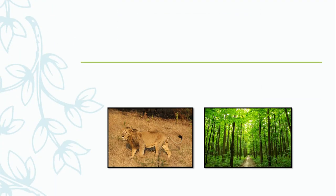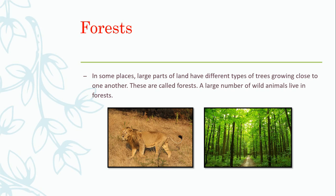Now, can you guess the next type of land by looking at this picture? Yes, you are correct. It is forests. Now, what are forests? In some places, large parts of land have different types of trees growing close to one another. These are called forests. A large number of wild animals live in forests.